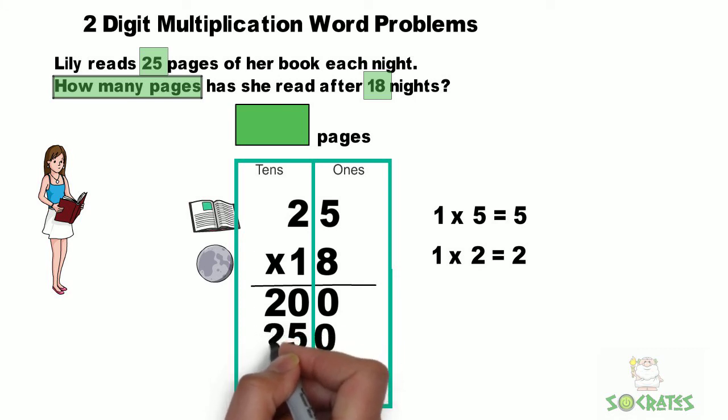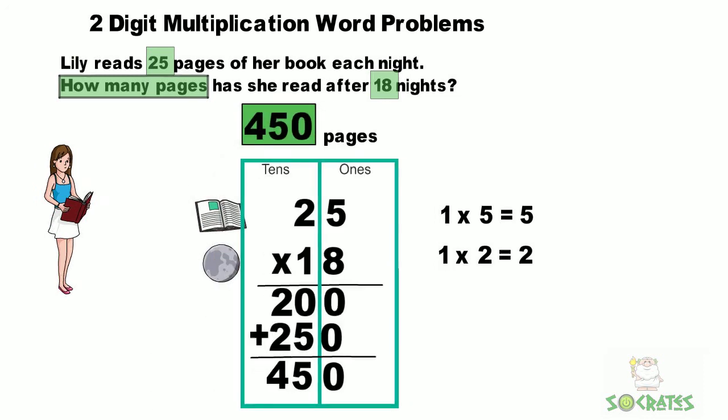Now, we have 250 when we multiply by the tens and 200 by the ones. And we add those together. So we get zero in the ones place, 5, and then 2 plus 2 is 4. So our answer is 450 pages.